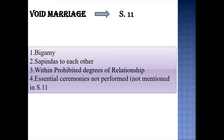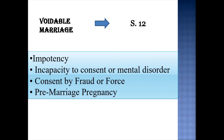These are the grounds on which any Hindu marriage can be declared void. Moving on to voidable marriage — a voidable marriage is a marriage which can be annulled by a decree of court on petition of either party. Parties cannot marry a second time unless the first marriage is dissolved. Voidable marriages are perfectly valid marriages as long as they are not avoided, and as long as they are not avoided, all legal consequences subsist.